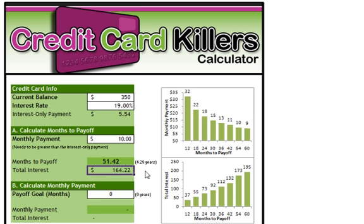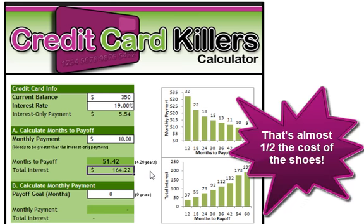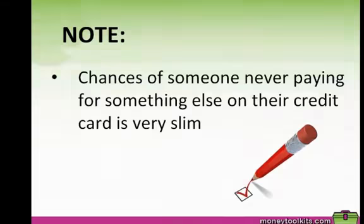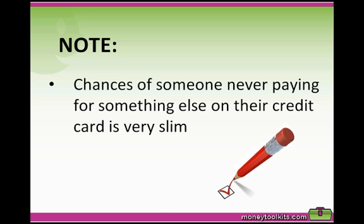She will also pay a total of $164.22 in interest — that's almost half the cost of the shoes. Note that this assumes she continues to pay $10 a month, makes no other purchases on the card for the entire 4.29 years, and the interest rate does not change. Generally the chances of someone never paying for something else on their credit card is very slim, and most of the time people forget they still have to pay for the item. In Poppy's example she most likely didn't realize she was going to pay $514 in total for the shoes instead of $350.